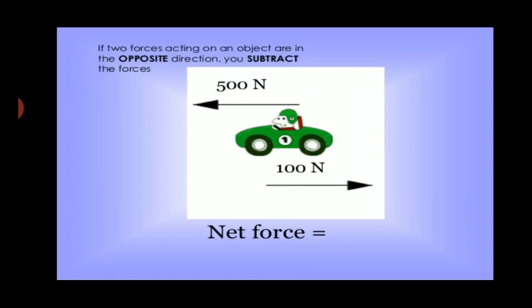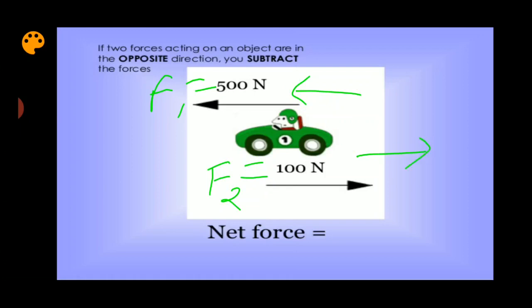Let's consider another example. If two forces acting on an object are in the opposite direction, you subtract the forces. For example, suppose 500 newtons of force is applied in one direction and another 100 newtons of force is applied in the opposite direction. The net force acting on the object will be the difference of both these forces: 500 newton minus 100 newton, which is 400 newtons.